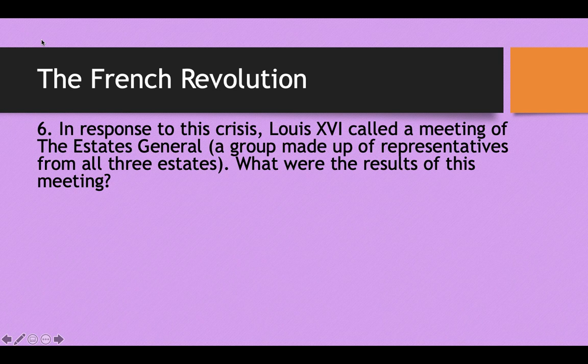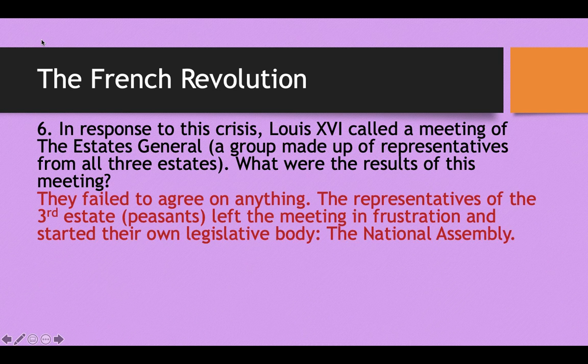In response to this crisis, Louis XVI called a meeting of the Estates General, which had not met in France for over a century. This group was made up of representatives from all three estates — including the third estate, the peasants. But they really couldn't agree on anything. The things the peasants wanted were different from the things the nobility wanted, and they could not reach a consensus.